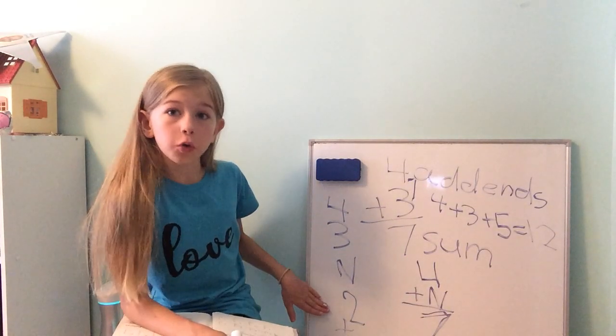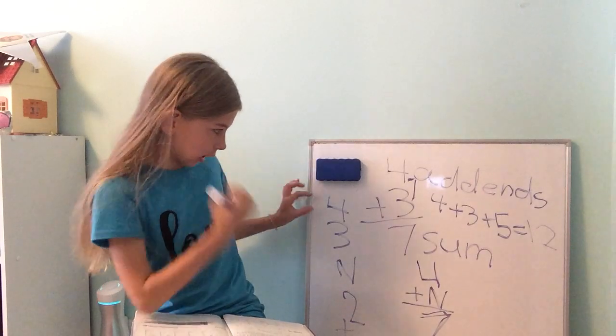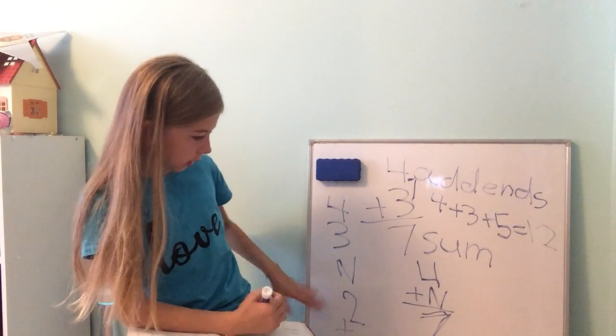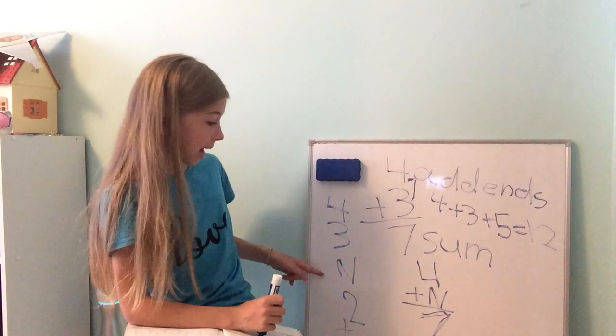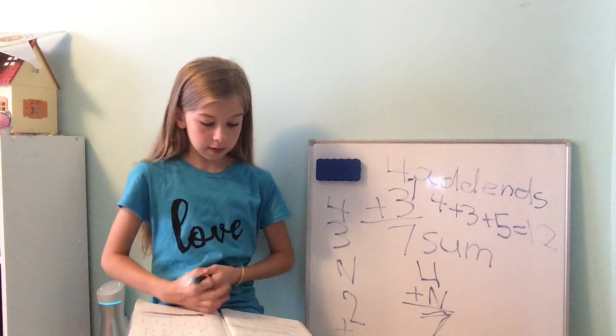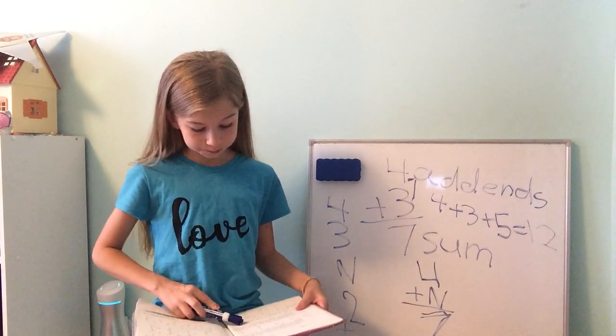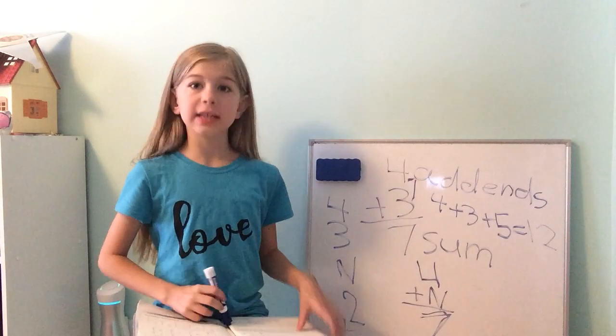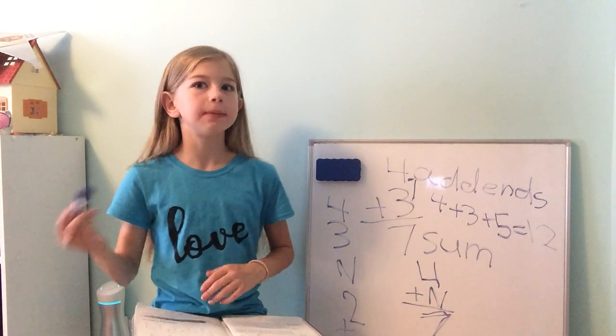4 plus 3 plus 2. That's how you do it. 4 plus 3 plus 2 equals 7 plus 2. 9. And then you would go 14 minus 9. So the answer would be 5. Because 9 plus 5 equals 14, which is also 14 minus 9.